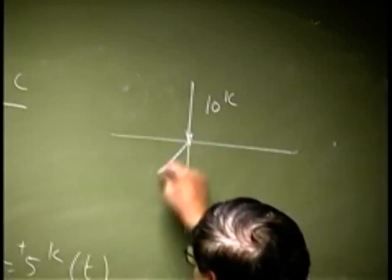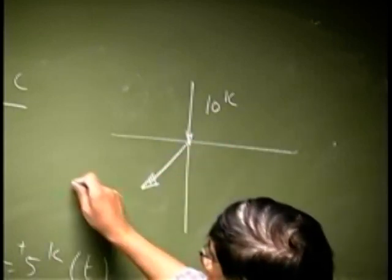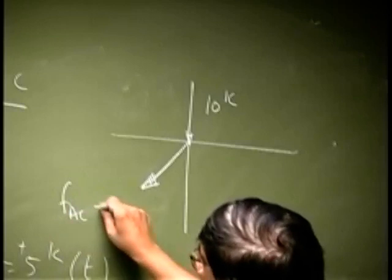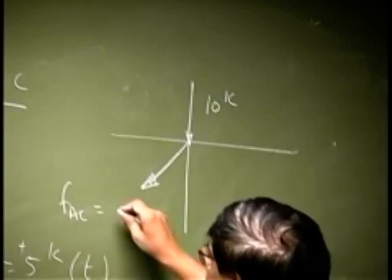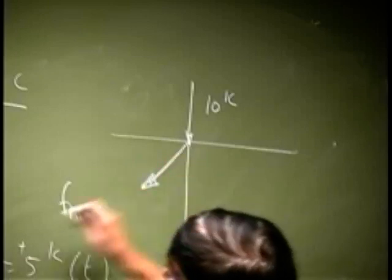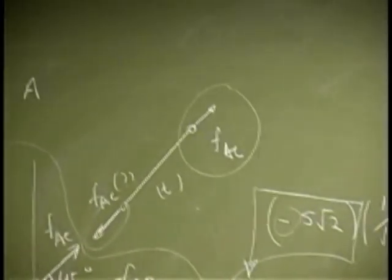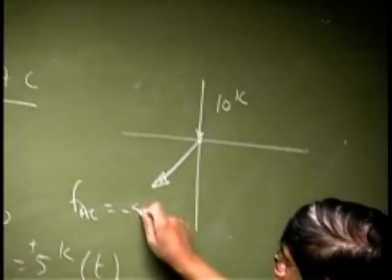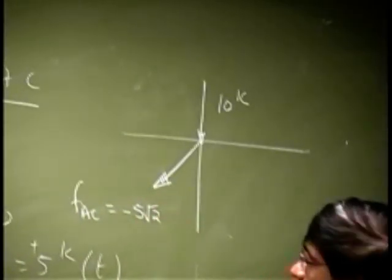It's FAC. If I work with this direction, you are using this arrow. And this arrow means that this magnitude will be negative 5 root 2.